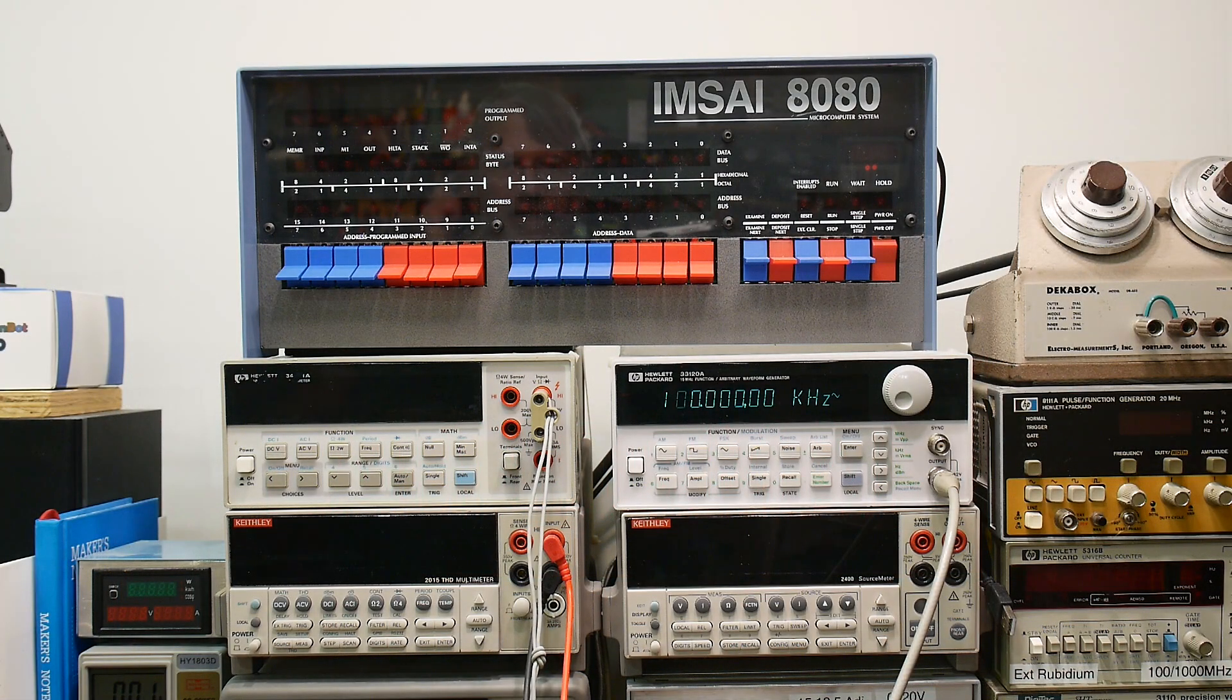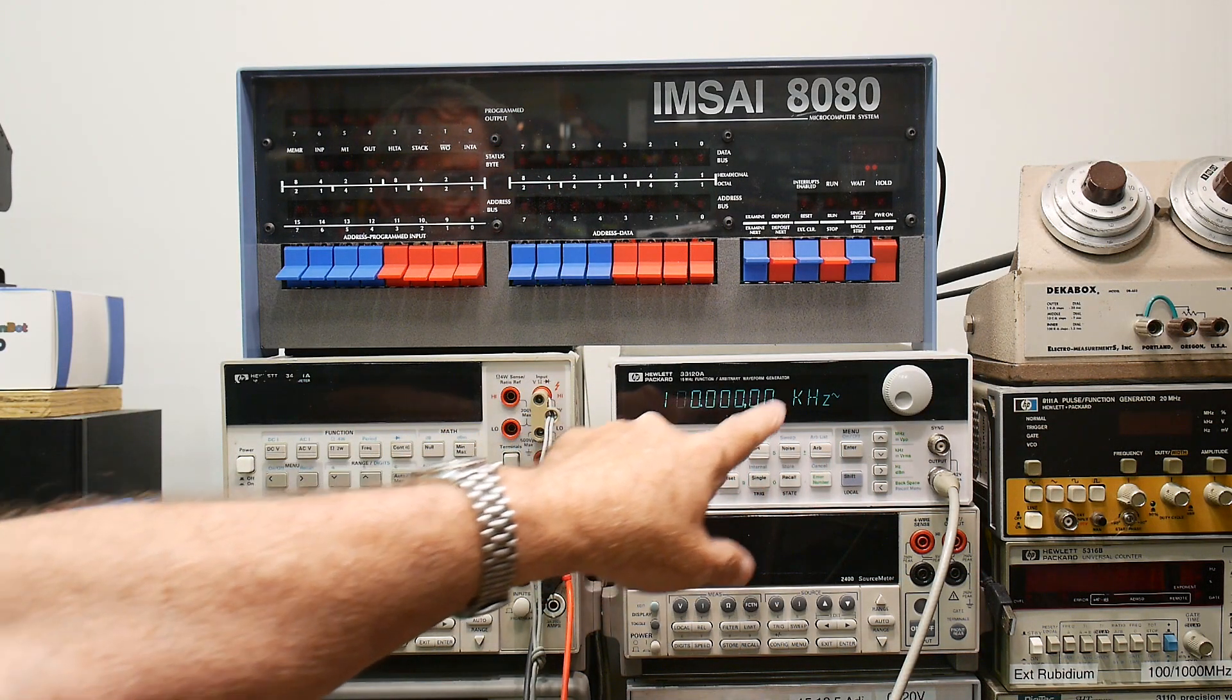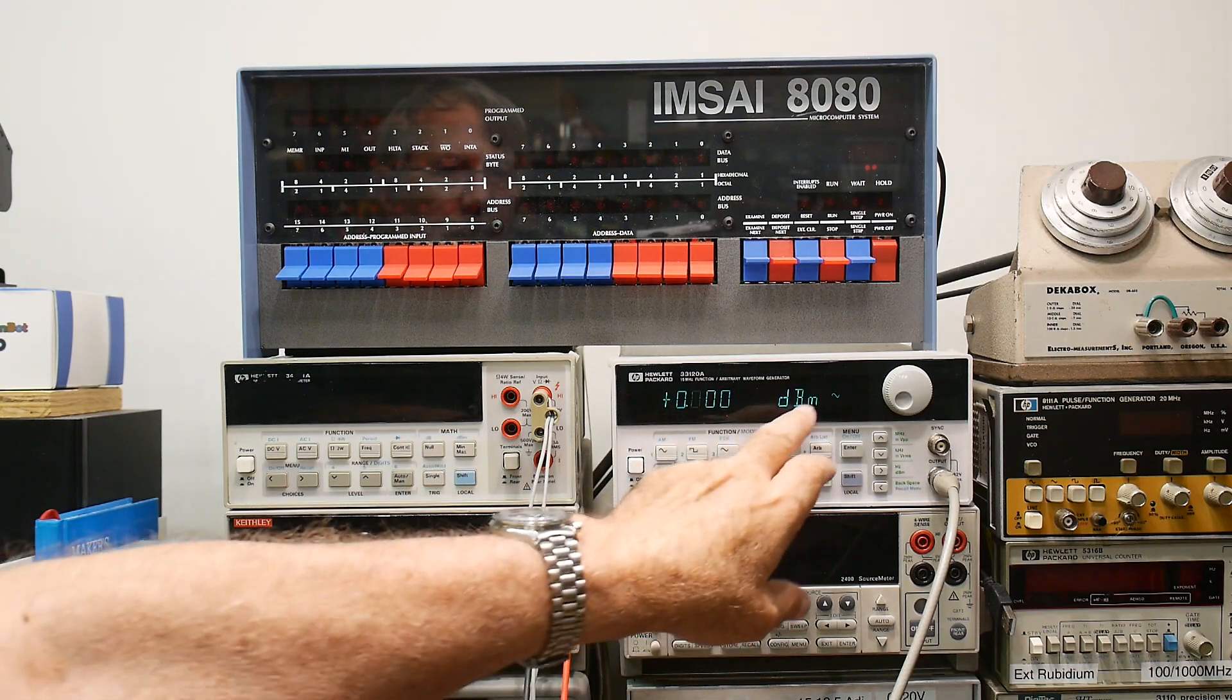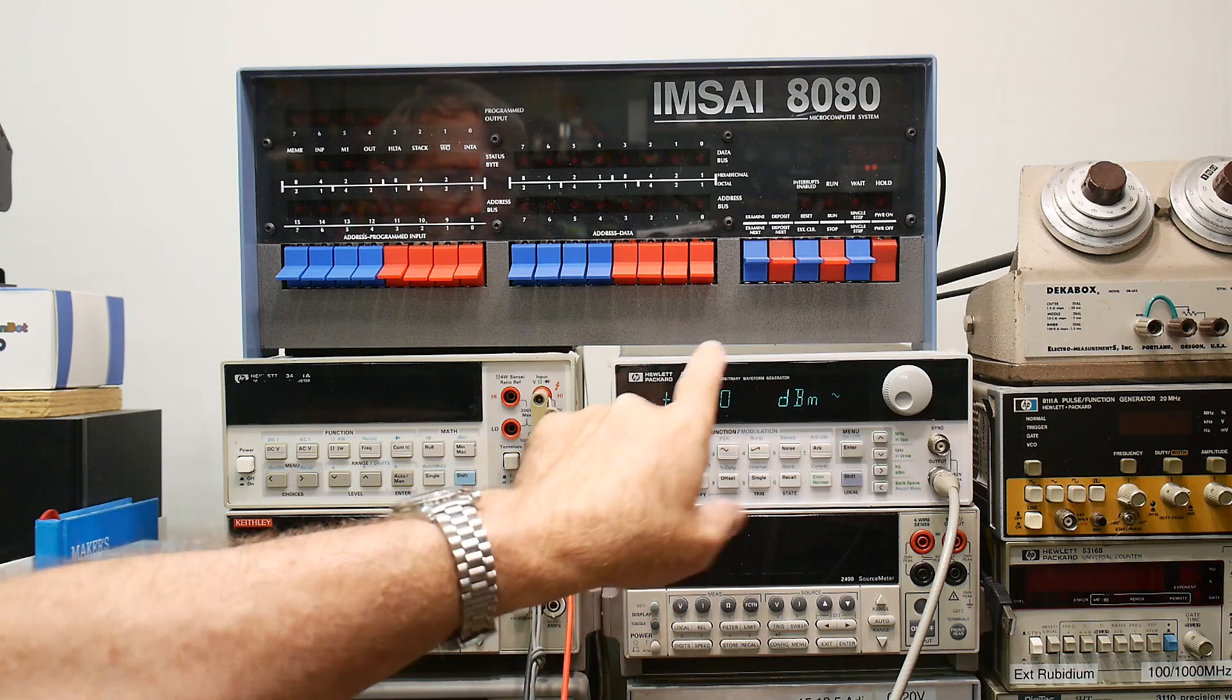All right, let's try to measure something today. I'm going to be measuring 100 kilohertz signal and amplitude is set at zero dBm. So that is one milliwatt.